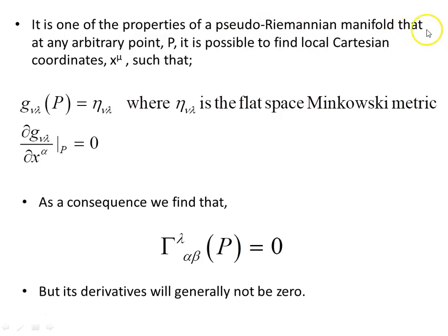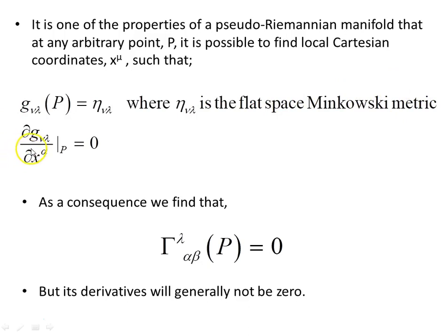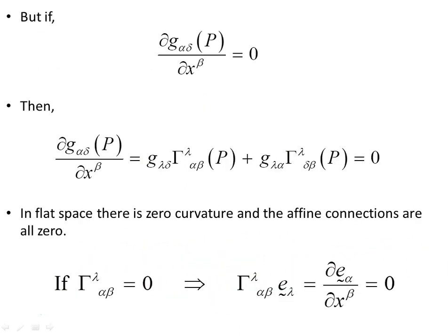It is a property of a pseudo-Riemannian manifold that at any arbitrary point P, it is possible to find local Cartesian coordinates x-mu such that the metric evaluated at that point reduces to the flat space Minkowski metric. The partial derivative of the metric with respect to the coordinates evaluated at point P is zero. As a consequence, in flat space the affine connections are zero, although the derivatives of the affine connection generally will not be zero.